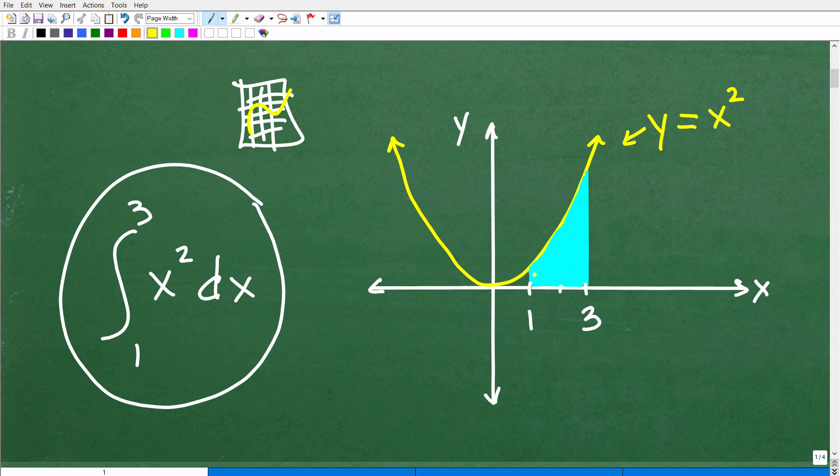But here we have this graph of this little U-shaped thing. Now, looking at this problem, this little X squared, okay, what we're trying to do is look at the graph of that.